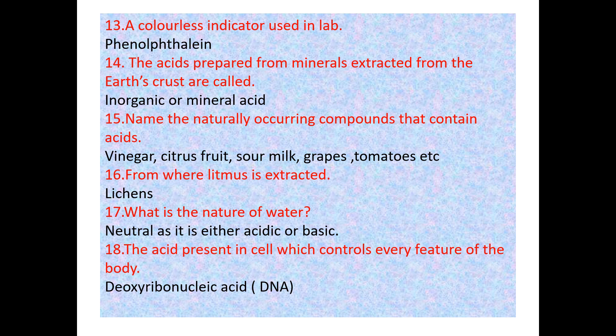Question 17: Name the acid present in cells which controls every feature of the body. That is deoxyribonucleic acid — DNA. DNA is a molecule that contains the genetic code of organisms; it is in each cell and tells the organism what proteins to make.